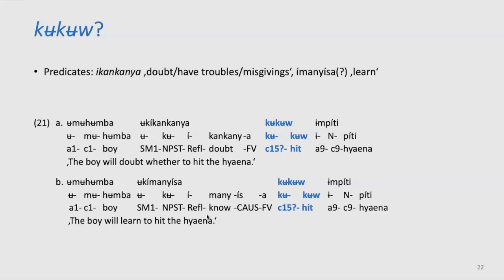Another question: about the subjunctive forms that seemed to be a pattern for object control verbs — did you have any subject control verbs in your data, and what happened with those? Did you also get subjunctive forms, or the infinitive? The subject control verbs, when used within a finite construction, had no subjunctive. The only verbs where the subjunctive occurred were those verbs that also occurred within object control structures.